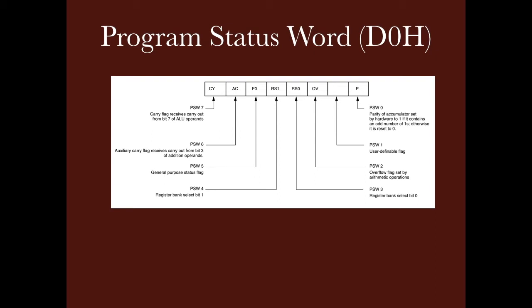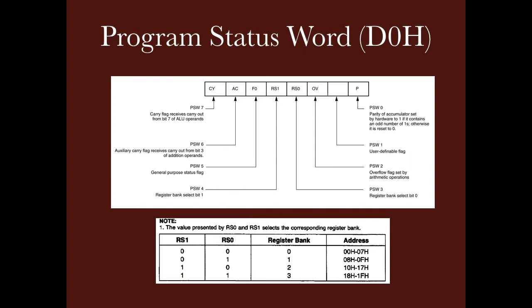The Overflow flag is set during signed arithmetic operations when an error is detected. The Carry flag is used for unsigned arithmetic operations, while the Overflow flag is used for signed operations. PSW bits D3 and D4 are used for register bank selection; they are called RS0 and RS1. When RS1 and RS0 are 00, Bank 0 is selected; 01 selects Bank 1; 10 selects Bank 2; and 11 selects Bank 3.